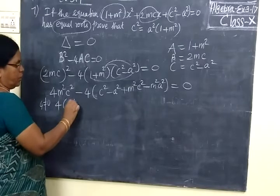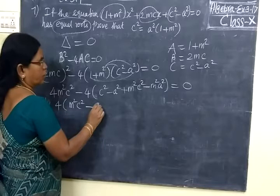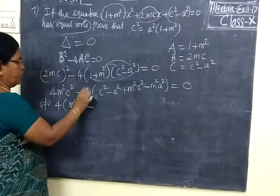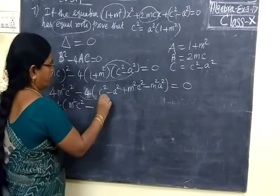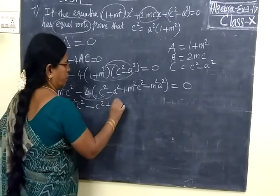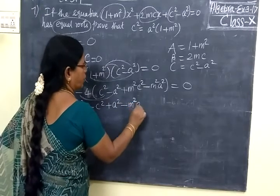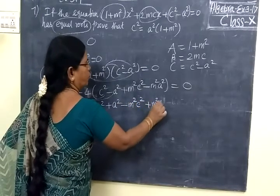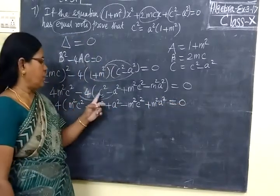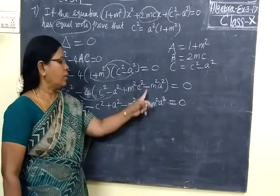4M²C² minus 4C² plus 4A² minus M²C² plus M²A² equal to 0. Minus into plus, minus M²C². Then plus M²A² equal to 0. You are changing the sign. So minus plus minus then plus.